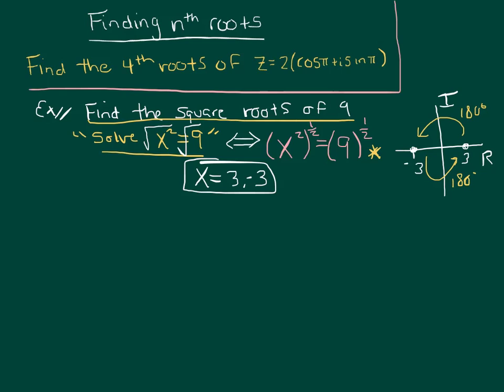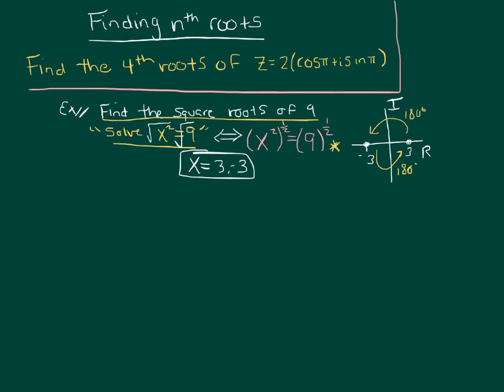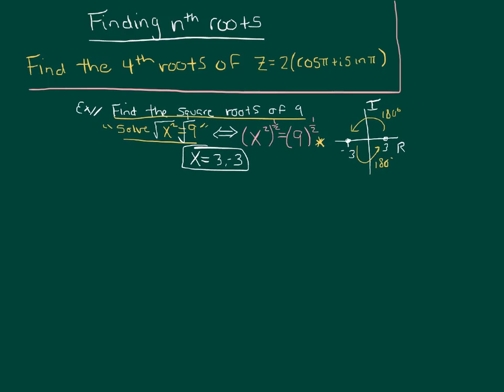So why am I drawing this to your attention? Because it's going to help us solve our problem above here, which is to find the fourth roots of z equals 2 cosine π plus i sine π.